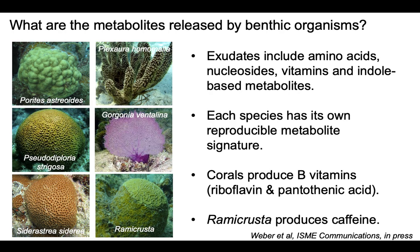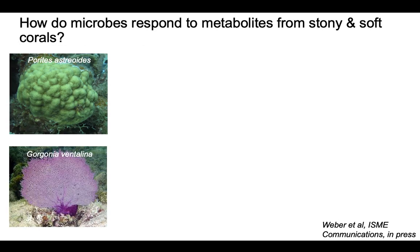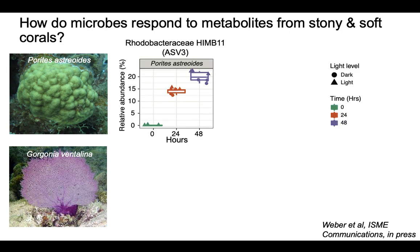Next, we exposed exudates collected from Porites astroides and Gorgonia ventolina separately to reef water microbes, and compared those to controls to see how the microbes grew over the course of 48 hours. There are about 450 microbial taxa in healthy reef water, and I'm going to show you what two of these taxa did — but we found differential growth of several dozens of microbes in these experiments.